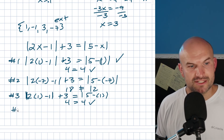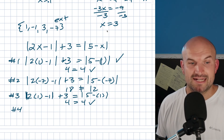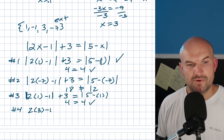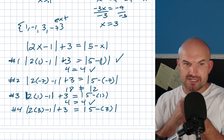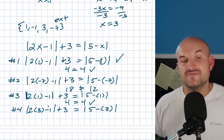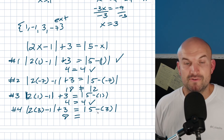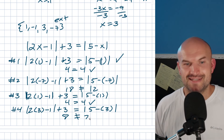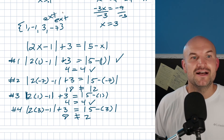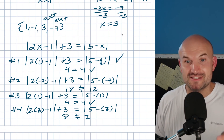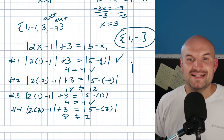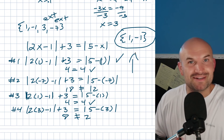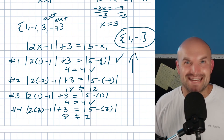Finally, let's check x equals 3. We compute the absolute value of 2 times 3 minus 1, plus 3. That's the absolute value of 5, which is 5, plus 3 equals 8. On the right, the absolute value of 5 minus 3 is 2. Since 8 does not equal 2, that solution is also extraneous. So the only two answers that work are x equals 1 and x equals negative 1. Hopefully this video was helpful — it was a bit of a challenge, and I look forward to seeing you in the next video.